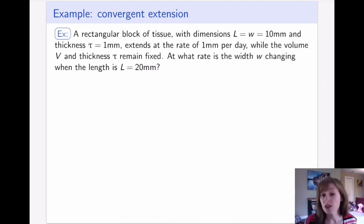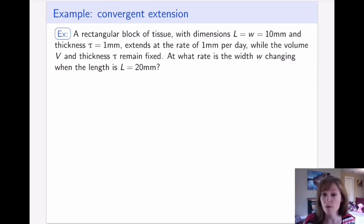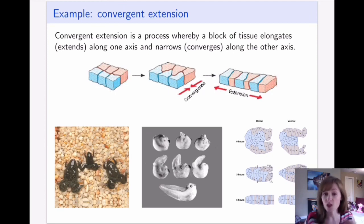Let's look at a problem with numbers. Say we start with a rectangular block of tissue, 10 by 10 — so actually a square — with a thickness of one millimeter. It extends at the rate of one millimeter per day while the volume stays the same and the thickness remains fixed. This is representative of the process: the thickness of the cells did not change, so the epithelial layer did not actually thicken; it simply got a different formation of the cells within it.